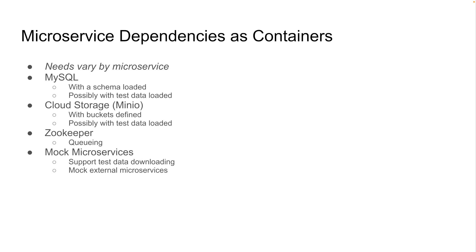I have these seven microservices and each needs one or more of the following containers: MySQL with a schema pre-loaded, cloud storage with storage buckets pre-defined, ZooKeeper for queueing requests, and a mock microservice to simulate responses from other external microservices. Additionally, some of our tests require a database and cloud storage with some pre-existing test data present when the tests begin.